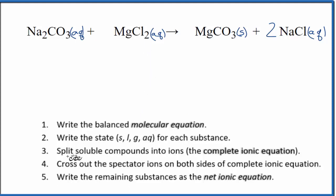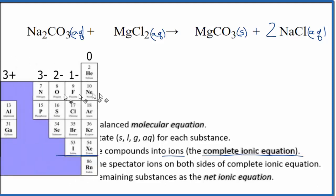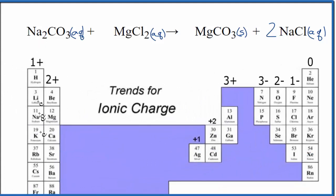Next up, we need to split the soluble compounds apart into their ions. This will be our complete ionic equation. So we need to know the ionic charge for each one of the components. Let's take a look at the periodic table to do that.